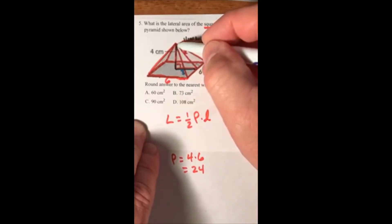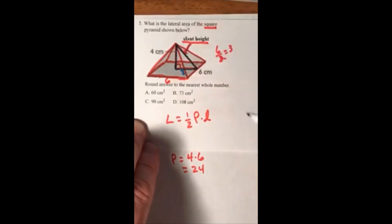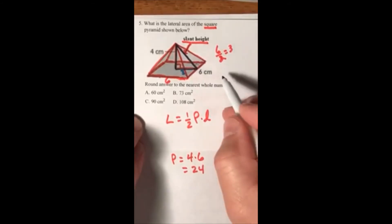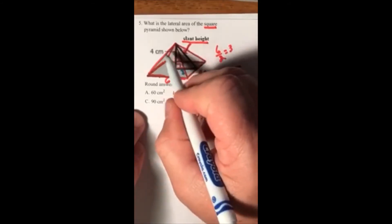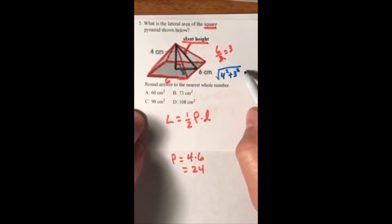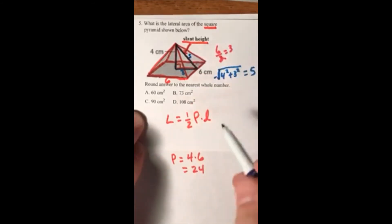Now we have a right triangle where the slant height is part of that right triangle. We can find that slant height by using Pythagorean theorem. If you're trying to find c, then all you have to do is square root the squared and then add the legs. So 4 squared plus 3 squared, and that's going to produce, that's going to equal 5.